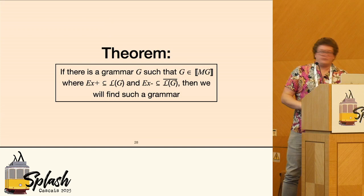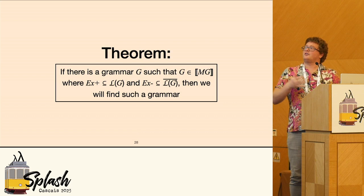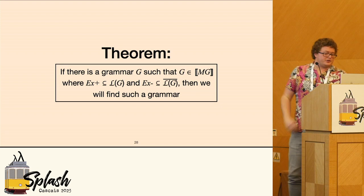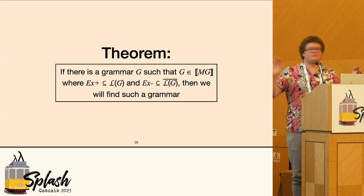So we have a theorem that if there is a grammar such that the grammar is in the metagrammer, the positive examples are in the language, and the negative examples are not in the language, then we will find such a grammar. So we're correct. That's our full algorithm. Please read the paper if you're interested in more.